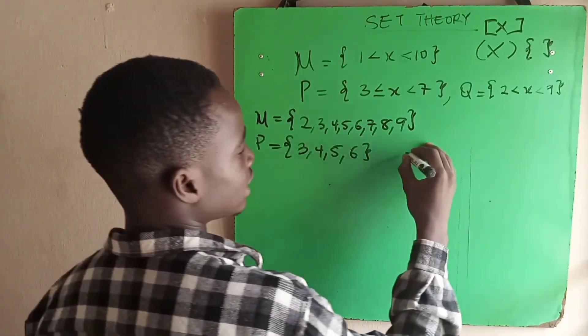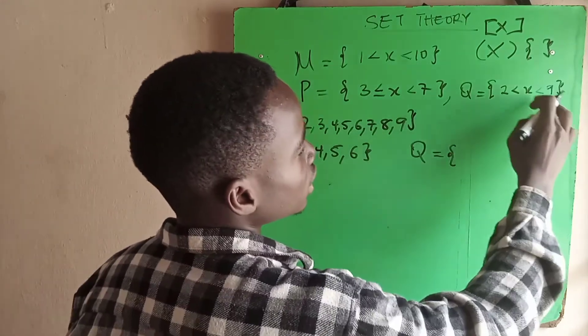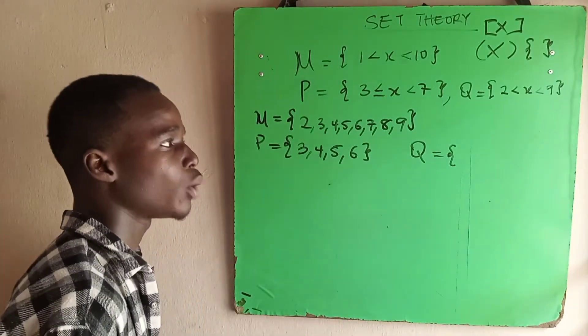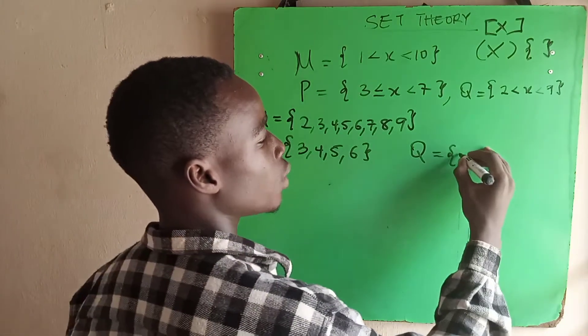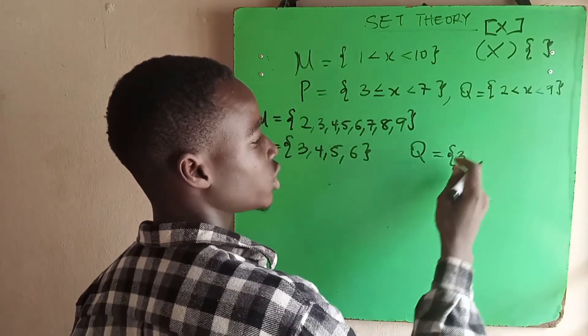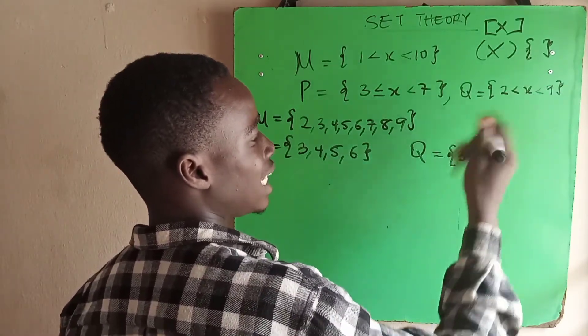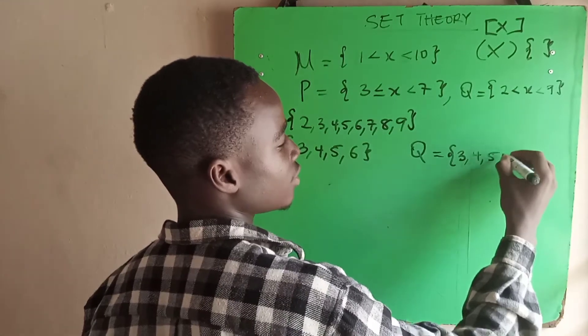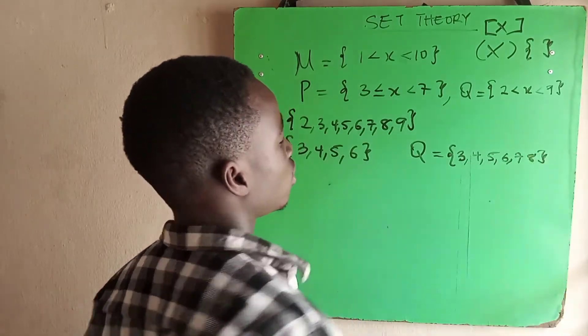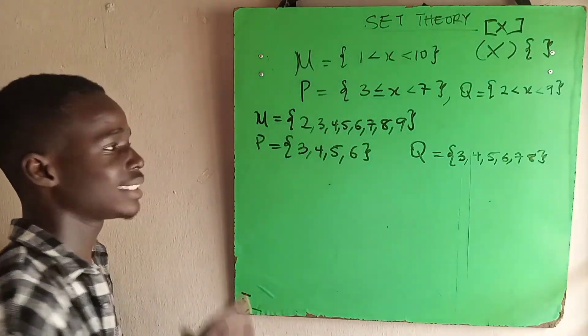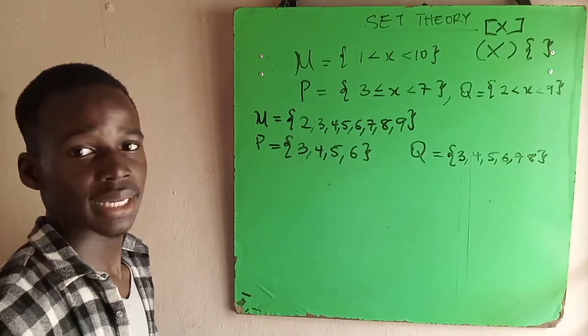And then for Q, it says x is greater than 2, and x is less than 9. So we will not have 2, while 2 is greater than 2, which starts from 3. Then our elements will also be less than 9. So we have 3, 4, 5, 6, 7, 8. We have succeeded in interpreting this set and expanding them to a simpler term.